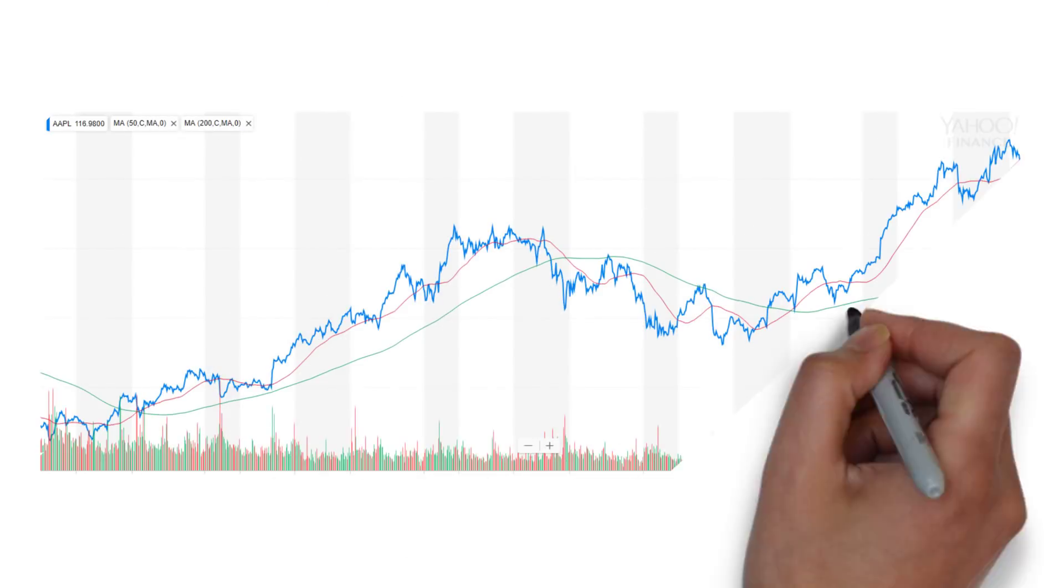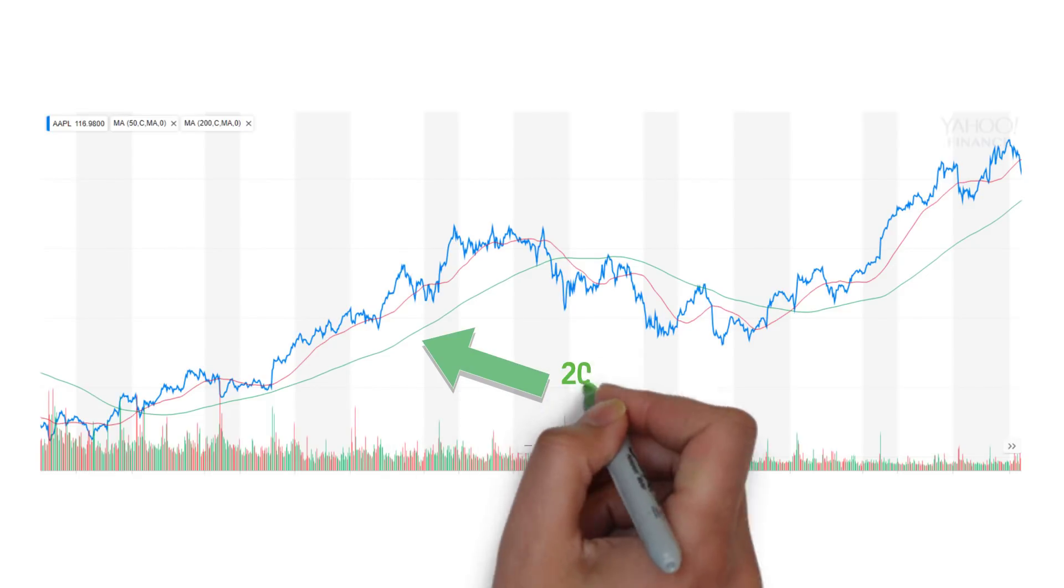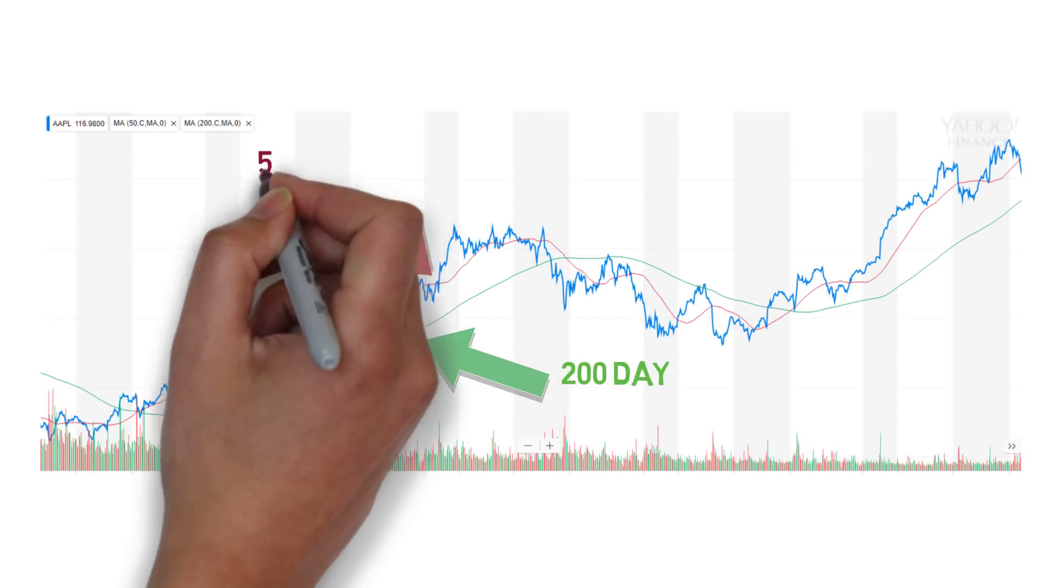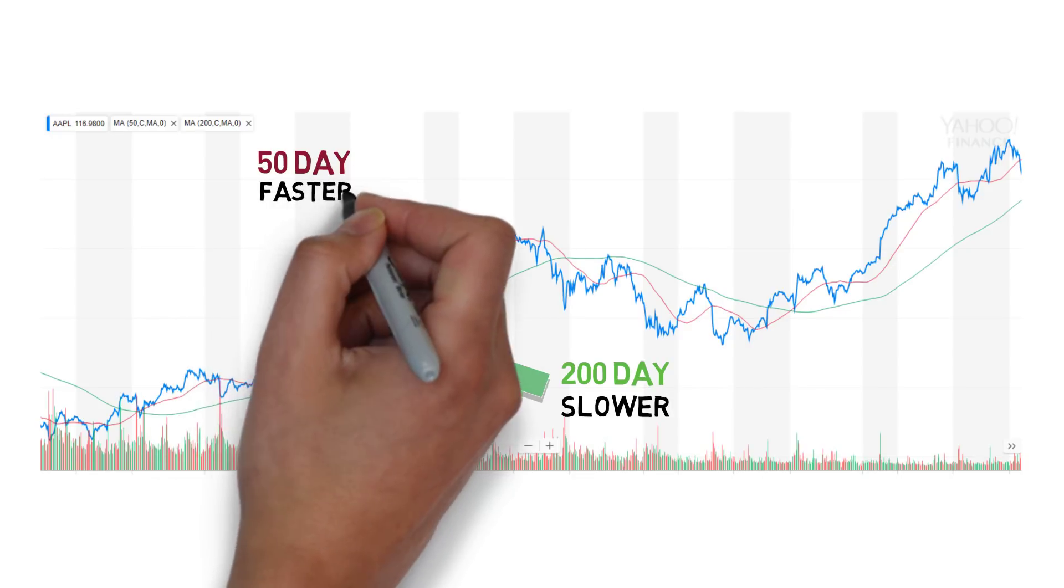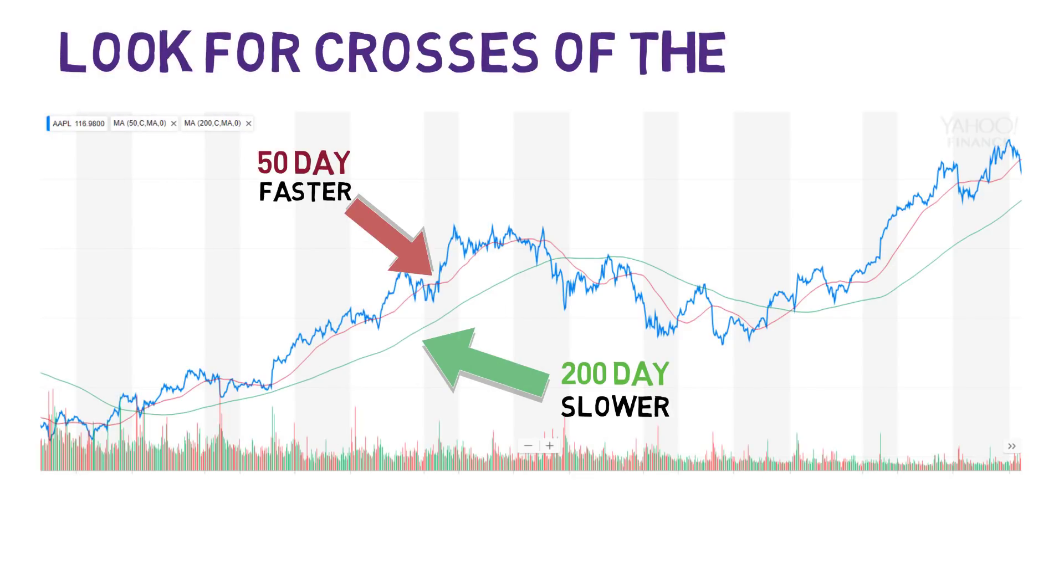We can also use two averages to get more information. Let's put the 200-day average and a 50-day average on Apple stocks. As you can see, the 200-day will move slower, while the 50-day will be a bit more volatile. Traders like to look for crosses—when the two lines touch.